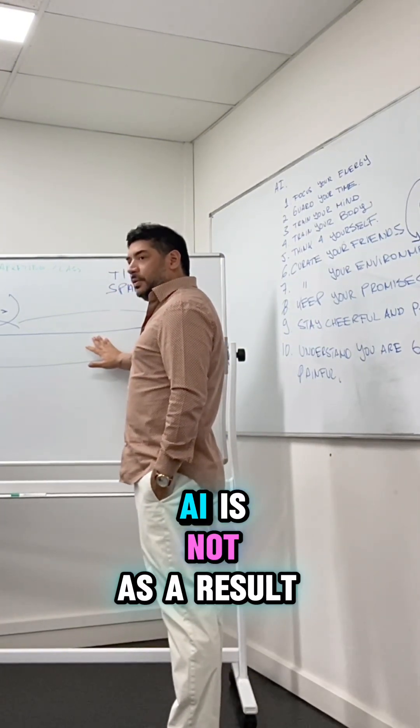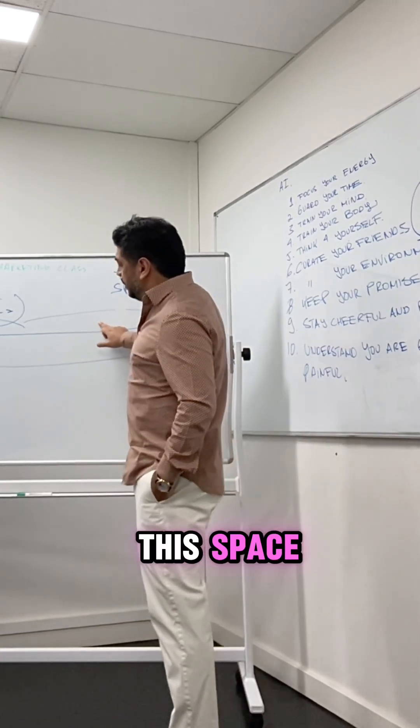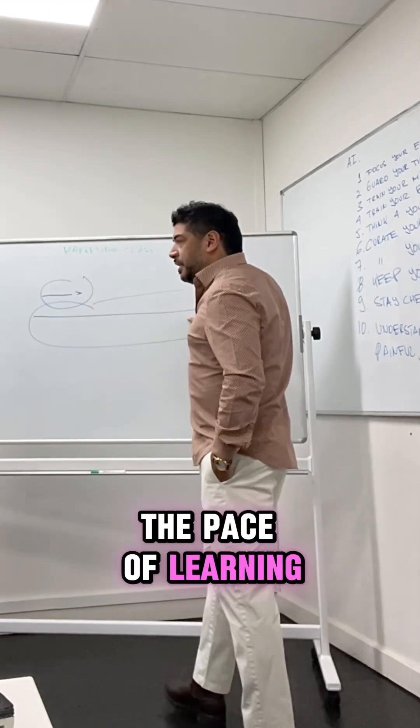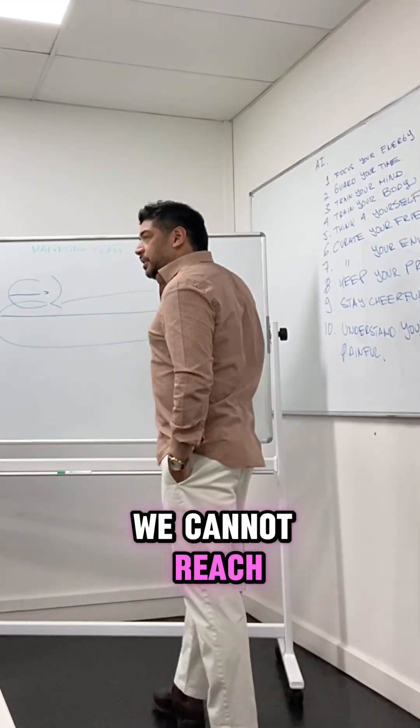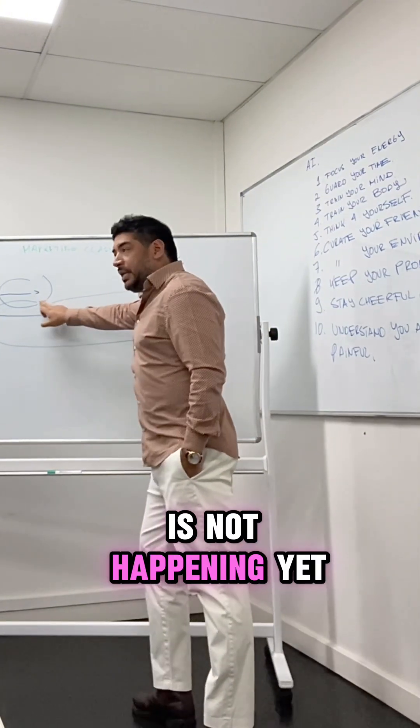AI is not. As a result of them not being constrained by this space, by this time, the pace of learning is exponential compared to us. So we cannot reach how fast they are. It's not happening yet for some people, it's happening.